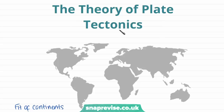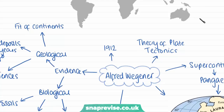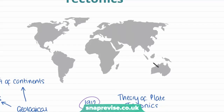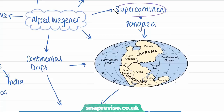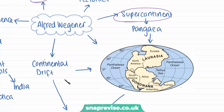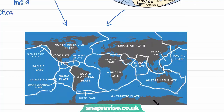Moving on, we're going to look at the theory of plate tectonics. This is a theory that was published by a man called Alfred Wegener in 1912. He proposed that the formation of the continents didn't always look like this and that the continents have moved into these positions. He suggested that the continents used to be in one formation as a supercontinent, which he called Pangea. We have seven main plates: the Pacific, North American, South American, Antarctic, African, Eurasian, and Australian.